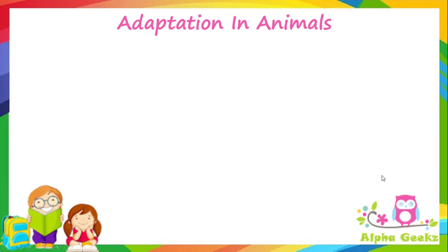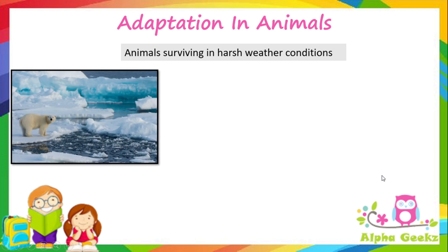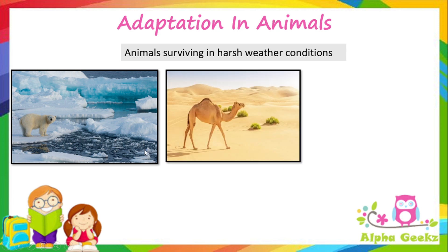All animals need to protect themselves from harsh weather conditions. Here we can see that polar bears are found in the Arctic sea ice — frozen sea water that floats on the ocean surface. A typical winter sea ice temperature is minus 20 to minus 40 degrees Celsius. Next we have camels, which typically live in deserts where it is extremely hot and dry.